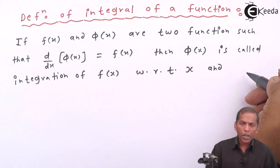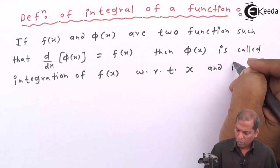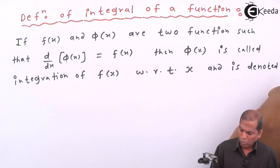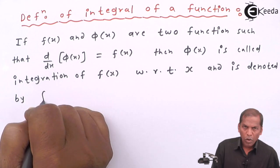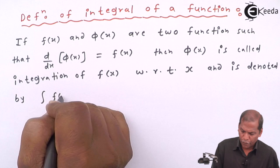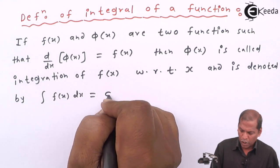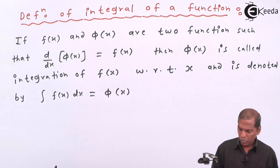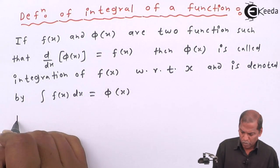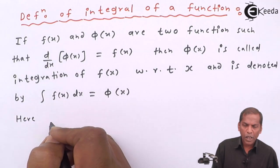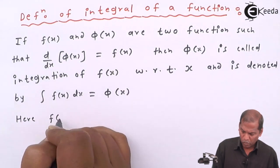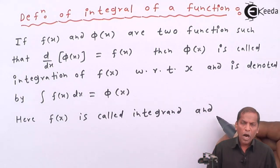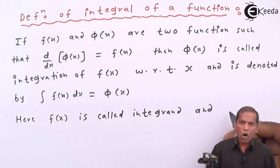and is denoted by integral f(x)dx = φ(x). Here, f(x) is called integrand and φ(x) is called antiderivative or primitive.